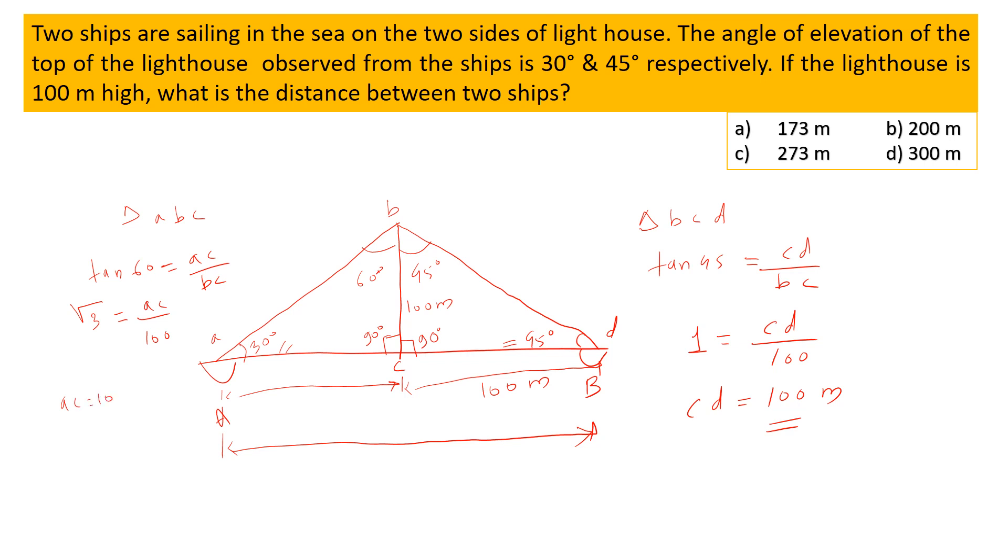So value of √3 is 1.73. So we get AC is equal to 173. So we get AC is equal to 173 meters.